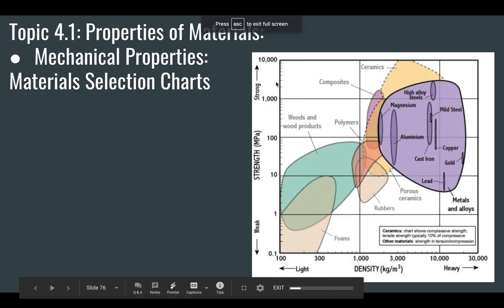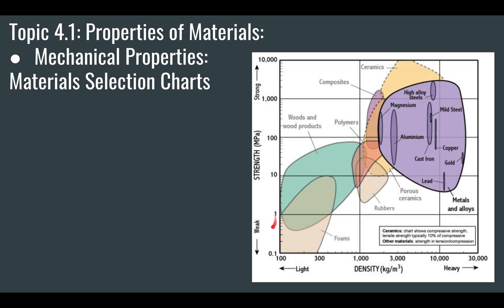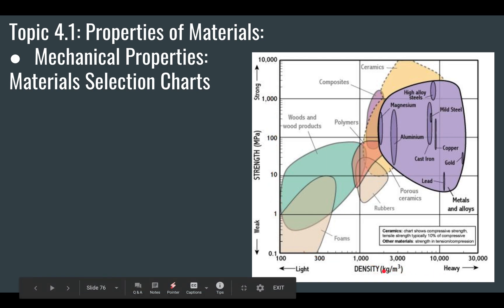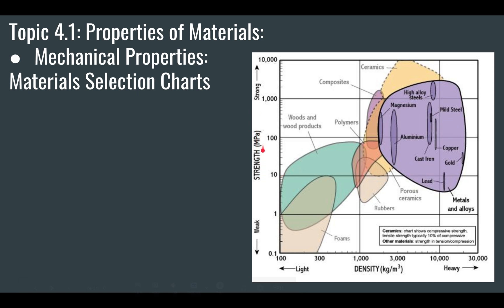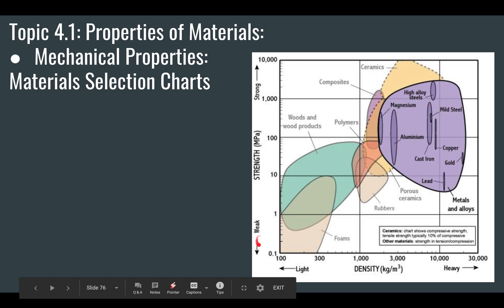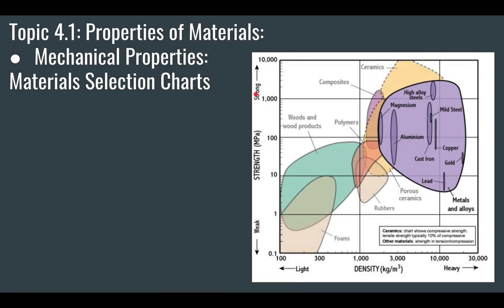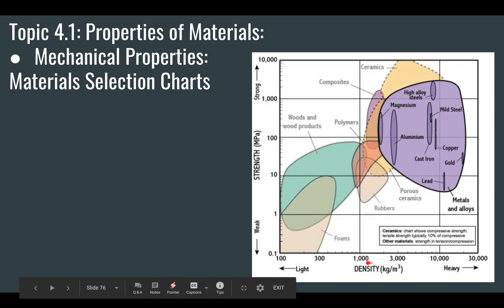We're looking at the second part of properties of materials and we're looking at graphs. The first kind of graph is called material selection charts. Here we're looking at strength on the y-axis, measured in megapascals — how much pressure something can withstand — and density on the x-axis, measured in kilograms per cubic meter. Lower density means lighter, higher density means heavier. These charts are meant to help you pick the correct material for your particular design.